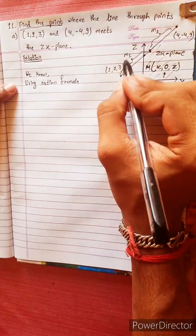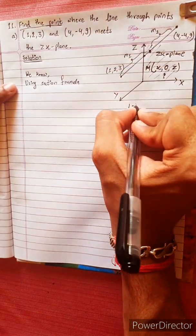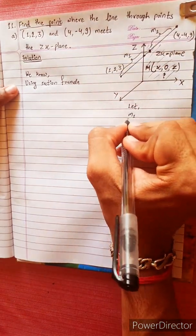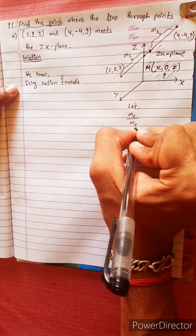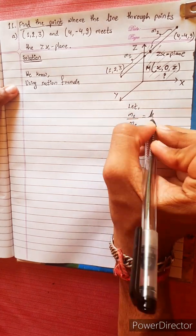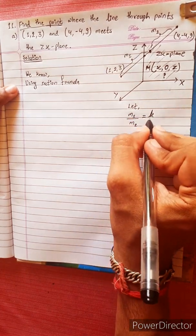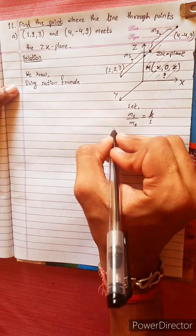We will use M1 and M2. Now we will use our array. M1 by M2 equals to K. So we will use K by 1.